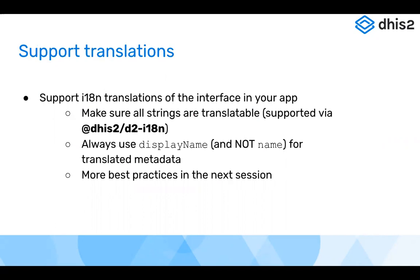For an application to be generic, it must support translations of the interface, which is a very important aspect, as you want your users to be able to use your application in different languages. You can do that through the d2i18n package — this stands for internationalization. This tool allows you to translate strings and all text in your application from English to different languages, and it can also translate dates and numbers into different locales.